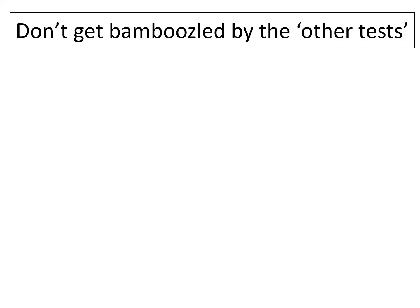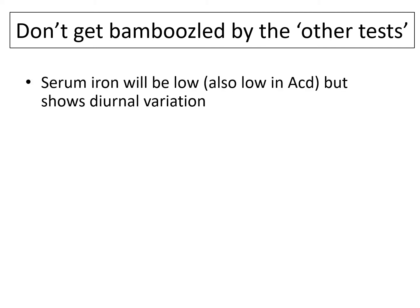Point number six: don't get bamboozled by the other tests. People have memories of medical school with large tables of different types of transferrin and arrows pointing up and down — it's not that difficult. Your serum iron in iron deficiency will be low, but this is variable throughout the day. The serum iron is also low in anemia of chronic disease. Total iron binding capacity — i.e. how much iron the cells are able to bind — this will be high in iron deficiency.